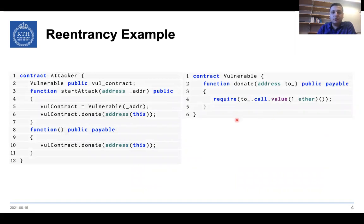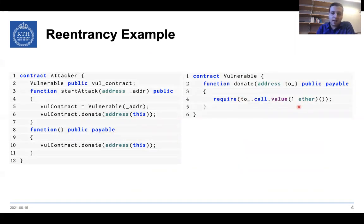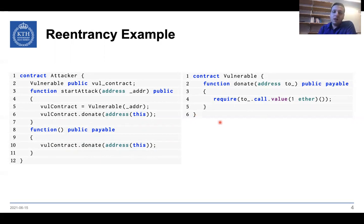Here we see the code example of the same thing we just saw in the previous slide. The attacker has a start attack function that calls the donate function of the vulnerable contract. The donate function gets the address as a parameter and sends some specific amount of Ether to this address. Then the unnamed payable fallback function of the attacker is going to again call the donate function, and this happens over and over until the vulnerable contract drains out of Ether.